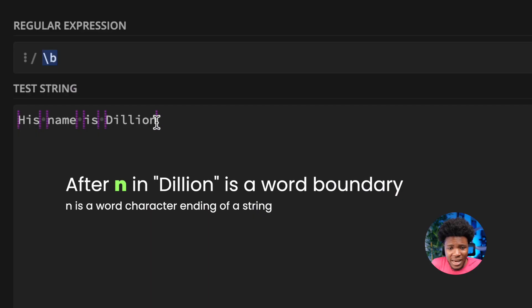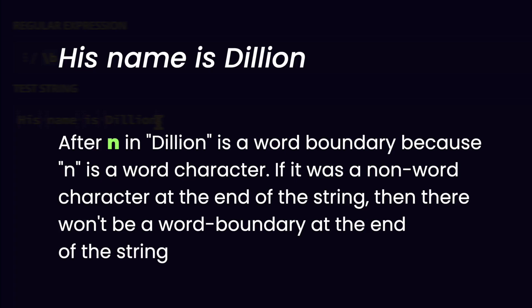At the end of the string, we also have a word boundary match. There is a word boundary at the end because the letter n, which ends the string, is a word character. If it was a non-word character that ended the string, then there would not be a word boundary at the end.